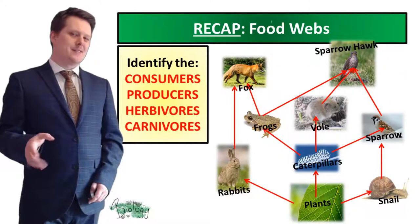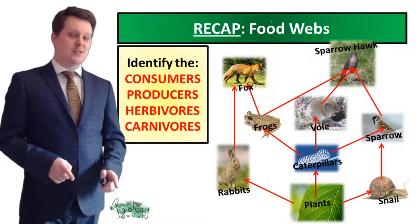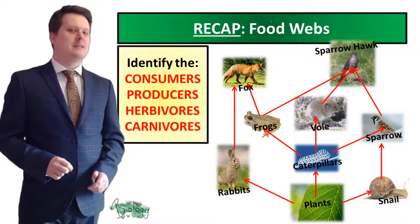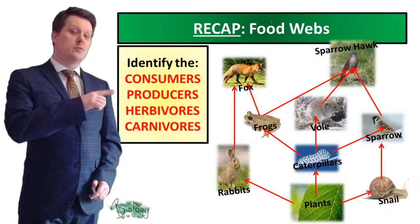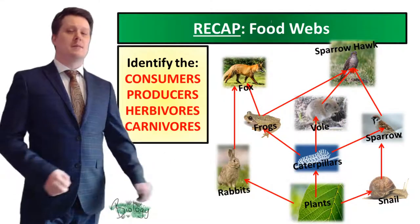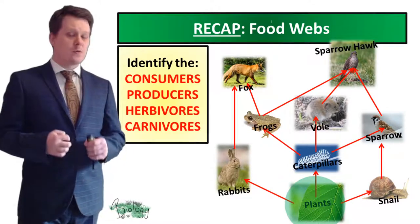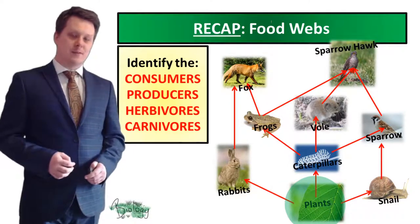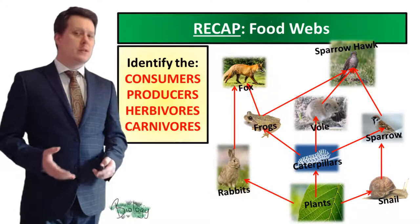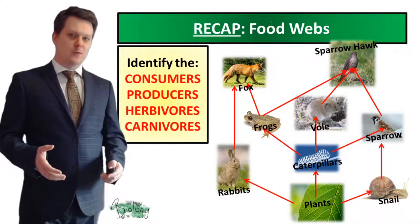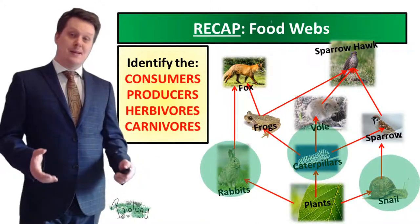Our consumers are anything in our food web that eats something else, and these are easily identified because they're always at the end of an arrow. Our producers are always at the bottom of our food web because they create their own glucose by a process called photosynthesis. Our herbivores are things that only consume plants — the producers. In our food web it's the rabbit, the caterpillar and the snail.